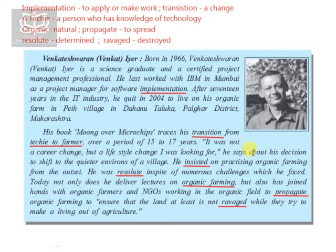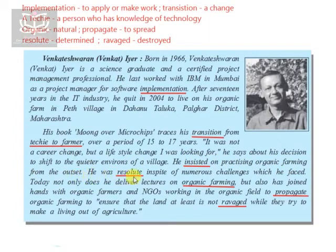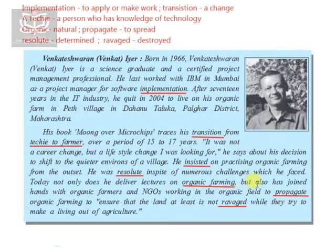He says about his decision to shift to the quieter, calmer environment of a village — away from the crowded city. He insisted on practicing organic farming from the outset and was resolute — meaning determined — to do this type of farming no matter how many challenges he faced. Today, not only does he deliver lectures on organic farming, but he has also joined hands with organic farmers and NGOs to propagate, meaning spread, organic farming.